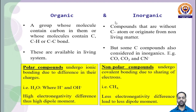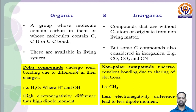Organic molecules are the group of molecules that contain carbon, or whose molecules have C–H or C–C bonds. Inorganic compounds are without carbon atoms or originate from non-living matter. Some carbon-containing compounds like carbon monoxide (CO), carbon dioxide (CO₂), and cyanide are not placed on the organic side.